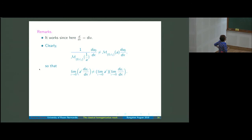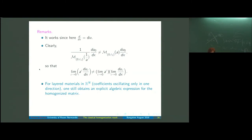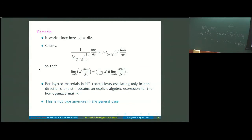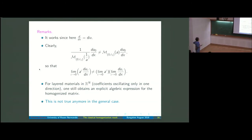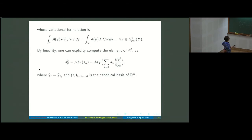Another remark: the limit is not the product of limits. In the special case of layered materials one can still get explicit expressions, but in the general case one cannot. This is why we need the result that ξ_0 = a_0 ∇u_0, where a_0 is the constant positive-definite matrix given by the cell average involving w_λ, the solution of the cell problem.